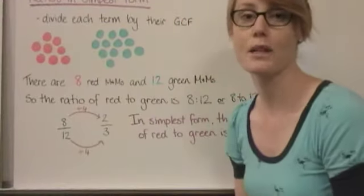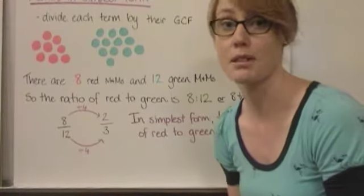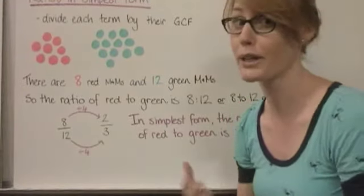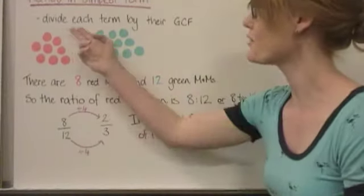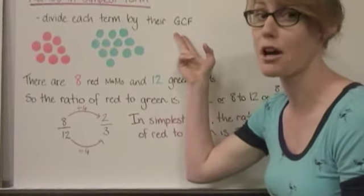Much like fractions, we can also write ratios in their simplest form. And we do that by following the same process as fractions. Divide each term by their greatest common factor.